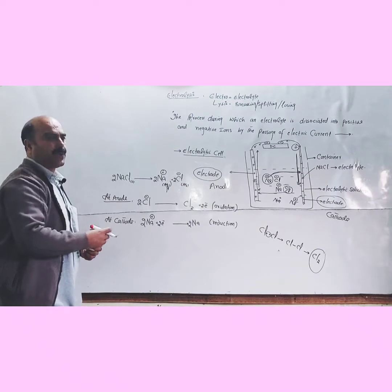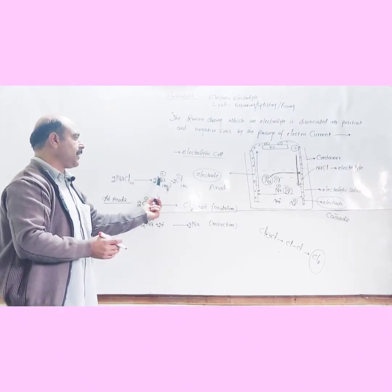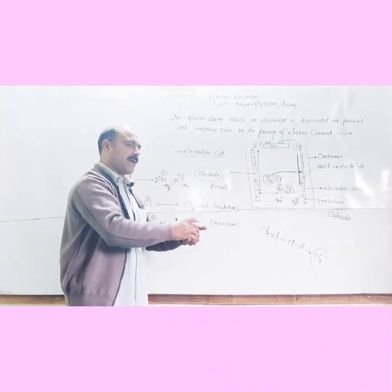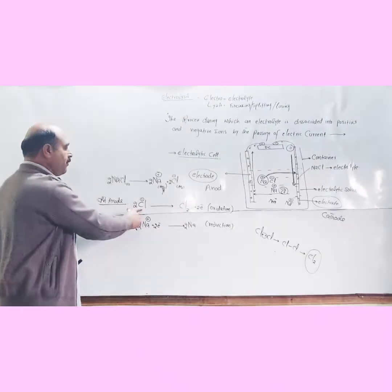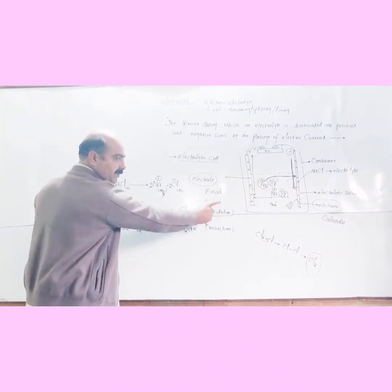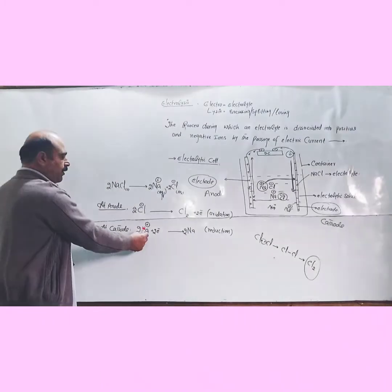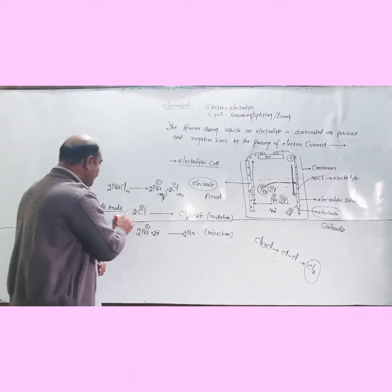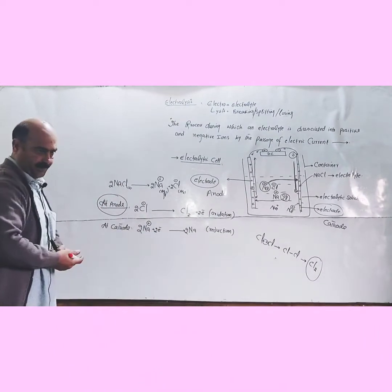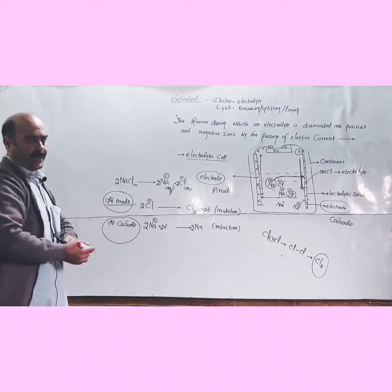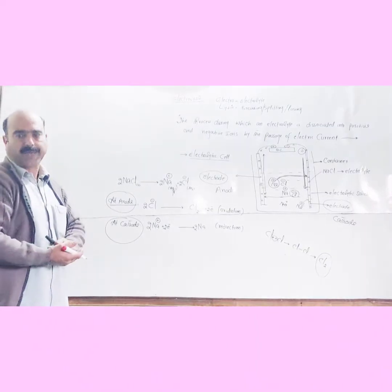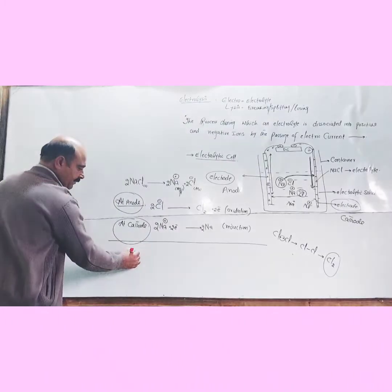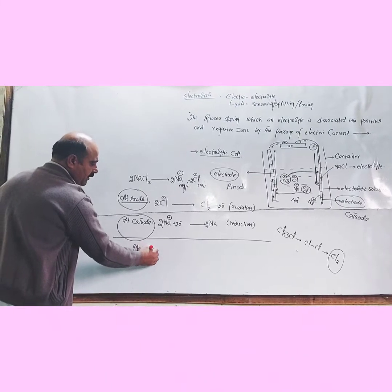When sodium chloride salt is dissolved in water, it ionizes into sodium cations and chloride anions. Anions move towards the anode where oxidation occurs, and cations move towards the cathode where reduction occurs. Combining the anode and cathode reactions gives the net reaction.